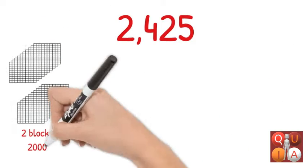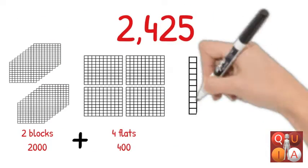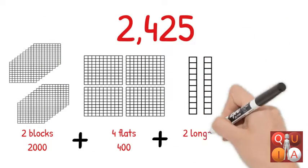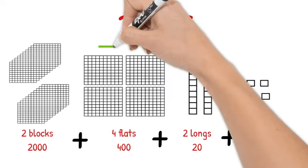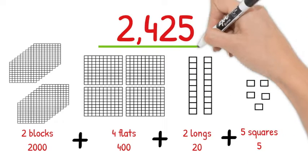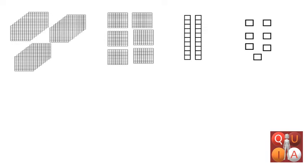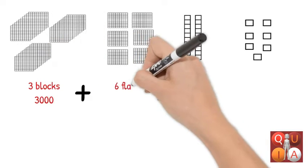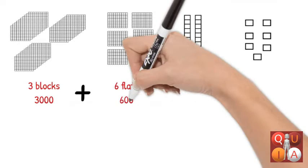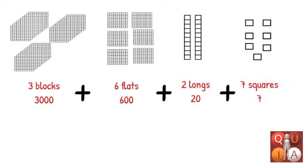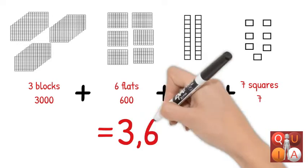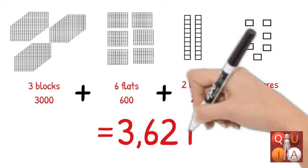2 blocks plus 4 flats plus 2 longs plus 5 squares equals 2,425. What is the equivalent of the illustration? 3 blocks plus 6 flats plus 2 longs plus 7 squares equals 3,627.